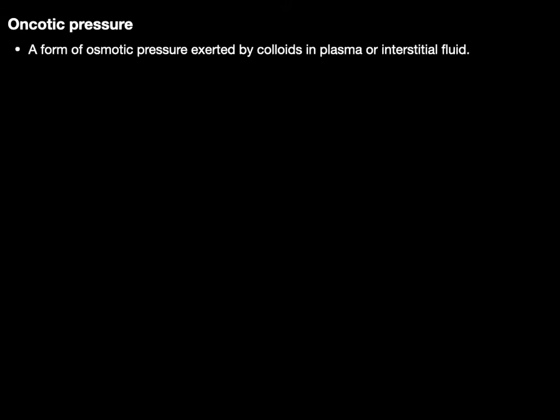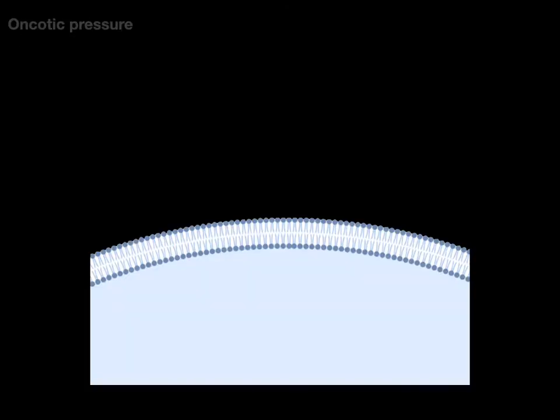Now what is oncotic pressure? Oncotic pressure is a form of osmotic pressure but it's exerted by colloids, and when we talk about human physiology it's often in plasma or the interstitial fluid. A really good example is the plasma protein albumin.